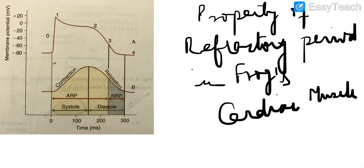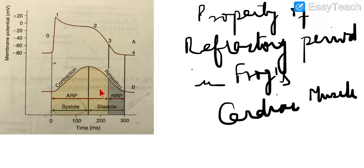This graph is regarding the effect and property of the refractive period of frog's cardiac muscle. Before looking at the graph, let's talk about the refractive period in cardiac muscle. If we compare, as in the previous graphs for skeletal muscle, the refractive period in the case of cardiac muscle lasts longer compared to the refractive period in skeletal muscle.